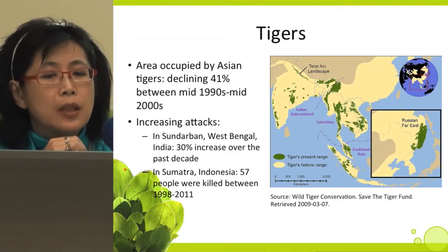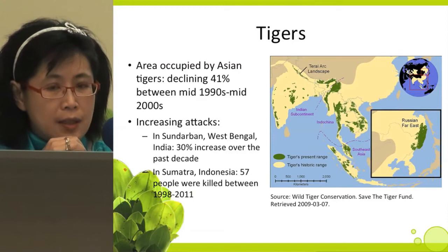Tiger range has been declining 41% between the mid-1990s to mid-2000s. There are also increasing effects in West Bengal, India — a 30% increase over the past decade.